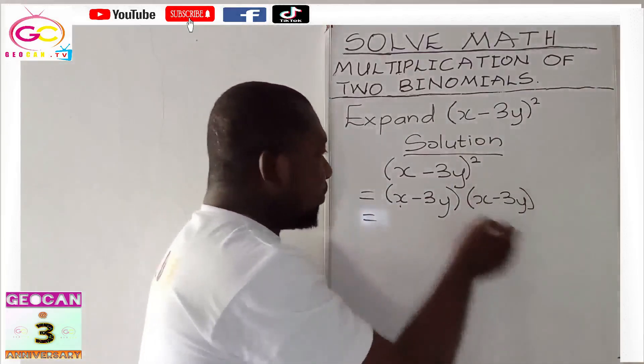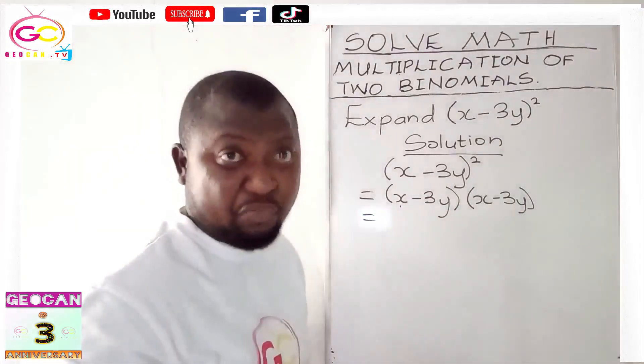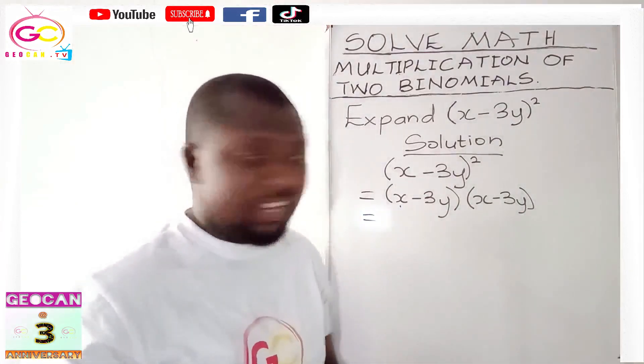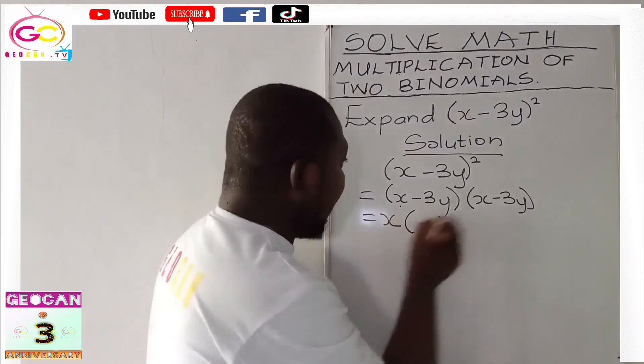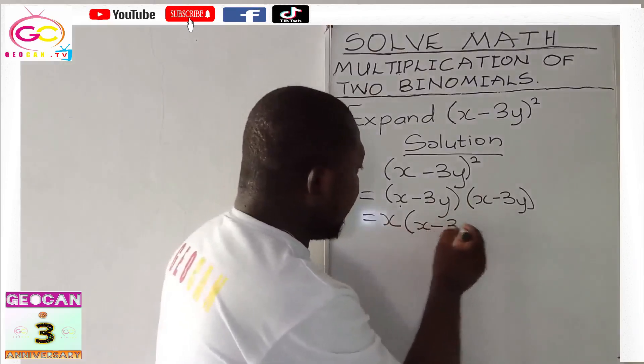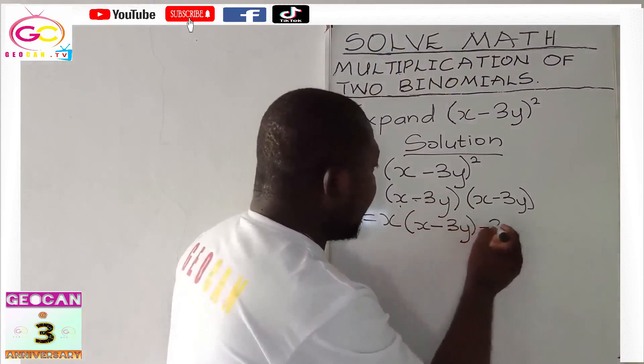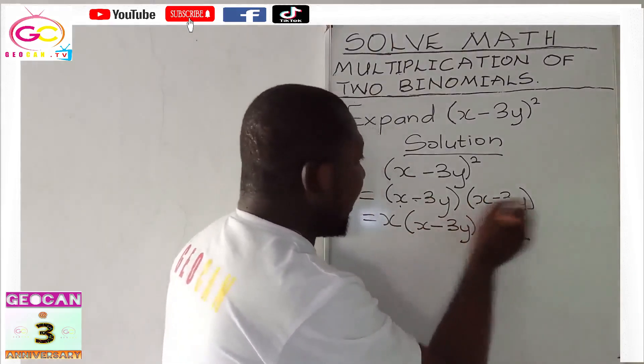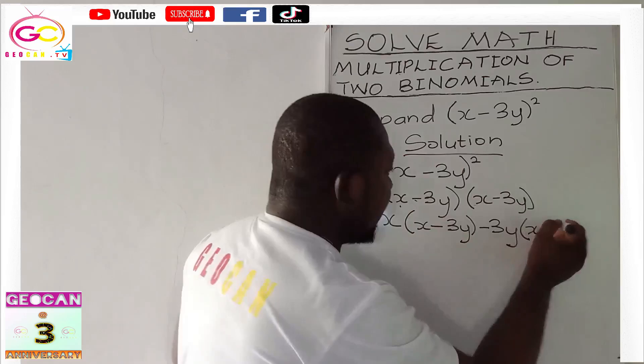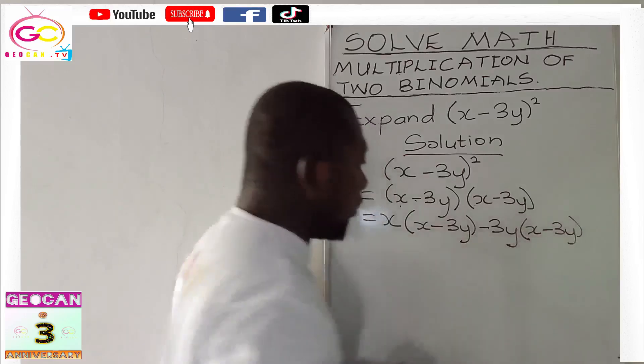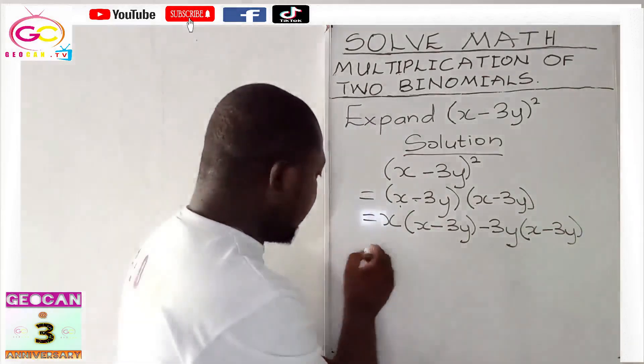Now, each time here, we multiply everything in there. We've been treating this in our previous lesson. So we have x into bracket x minus 3y bracket close. Then we have minus 3y is also multiplying everything here. So x minus 3y bracket close, neatly written.